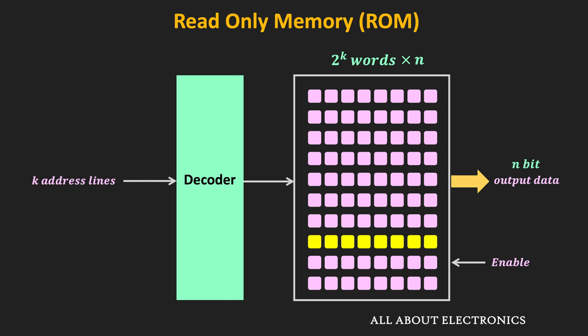Unlike the RAM, in traditional ROMs, the binary information which we want to store within the ROM must be specified by the designer during fabrication. During the fabrication of the ROM itself, the pattern of 1s and 0s is established in the ROM.